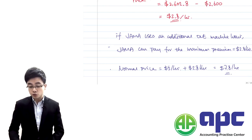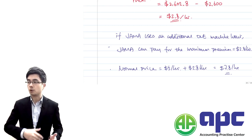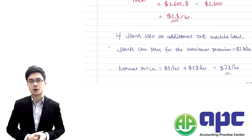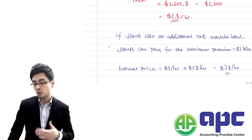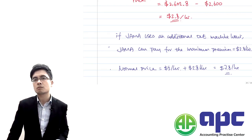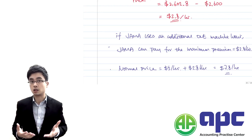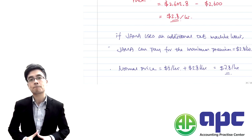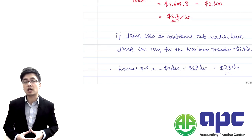The shadow price represents the maximum premium above the normal rate. For example, if a third party offers to provide machine hours at $6 per hour, the premium above the normal $5 rate would be $1 — which is less than $2.80, so JAMA should accept the offer. Any rate resulting in a premium above $2.80 would need further negotiation.